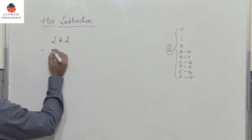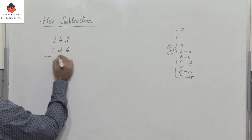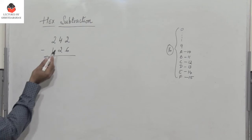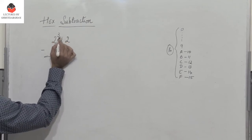242 minus 126. I need to subtract these two hex numbers. Here, 2 minus 6, so I need to borrow. This becomes 3.